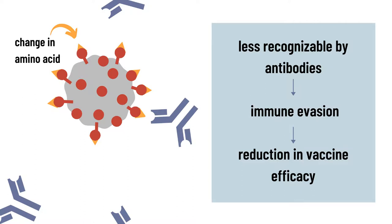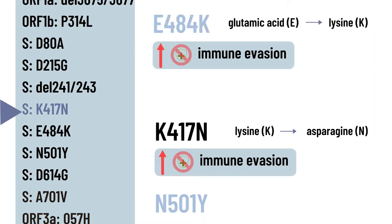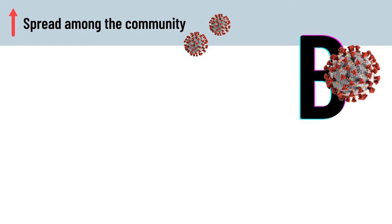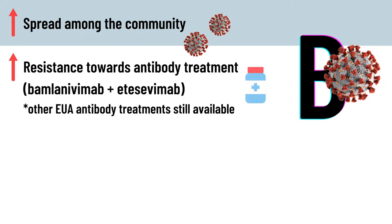The E484K mutation has been determined as the main cause of the reduction in efficacies of vaccines, as most available vaccines are constructed based on the spike protein of the original SARS-CoV-2. Studies also suggest that the combination of N501Y, E484K, and K417N mutations causes a greater increase in immune evasion. In general, the mutated characteristics of the beta variant include being about 50% more easily spread than the original SARS-CoV-2, and increased resistance towards the combination of bamlanivimab and etesevimab monoclonal antibody treatment, while other emergency use authorization antibody treatments are still available.